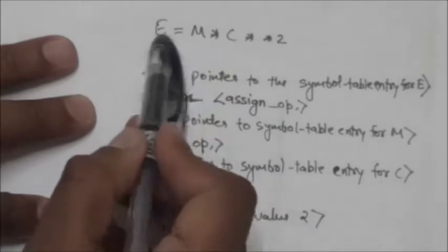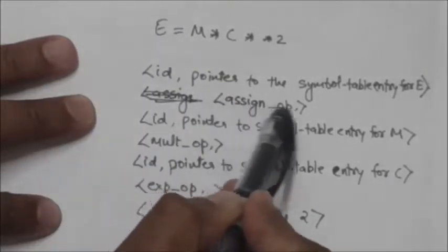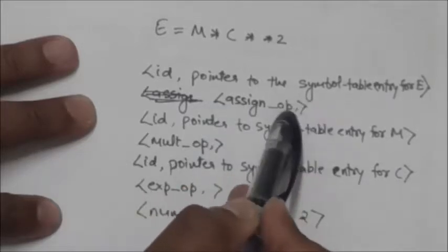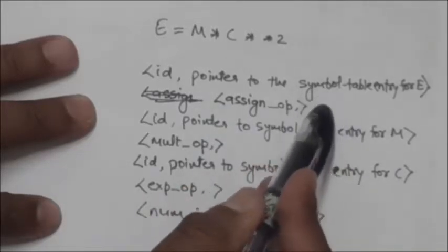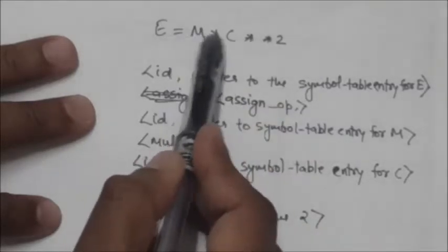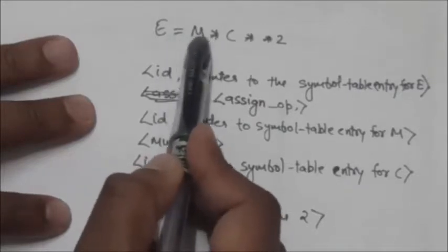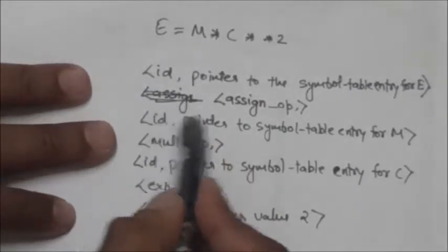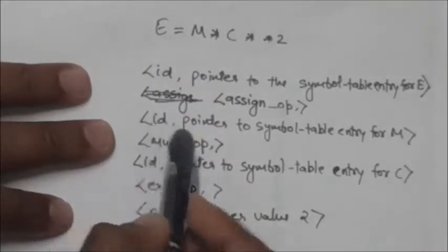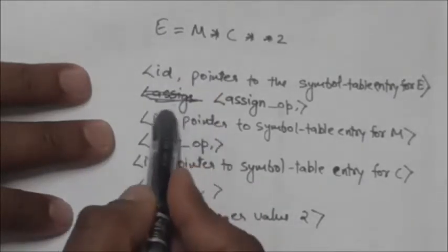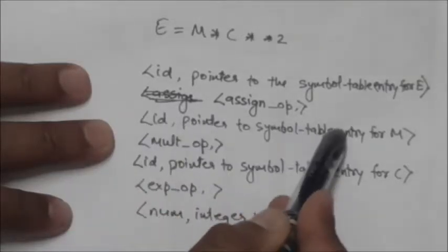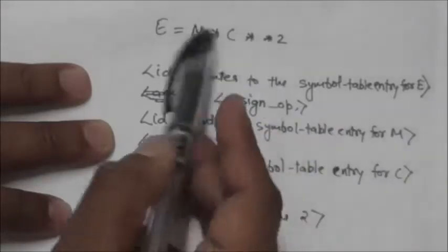Now see this equal sign — it is an assignment operator. The token for this is the assignment operator, but there is no attribute value associated with this token. Similarly, the capital M is an identifier, so the token for M is ID, and the associated attribute value is a pointer to the symbol table entry for M.